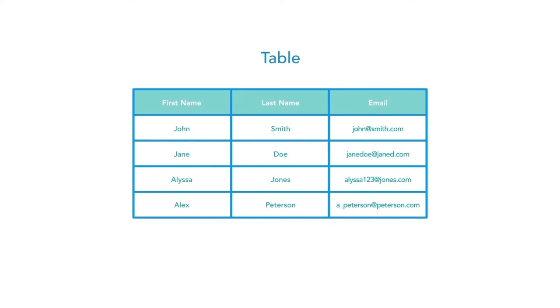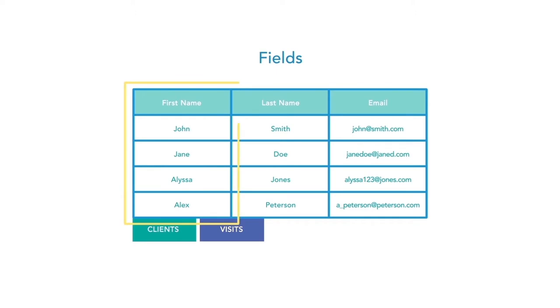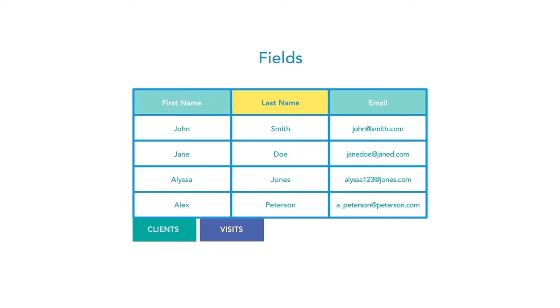A table stores data about a given subject, like clients or visits. A table is made up of fields that will store attributes about a subject. For example, first name, last name, and email are common fields in a client table.